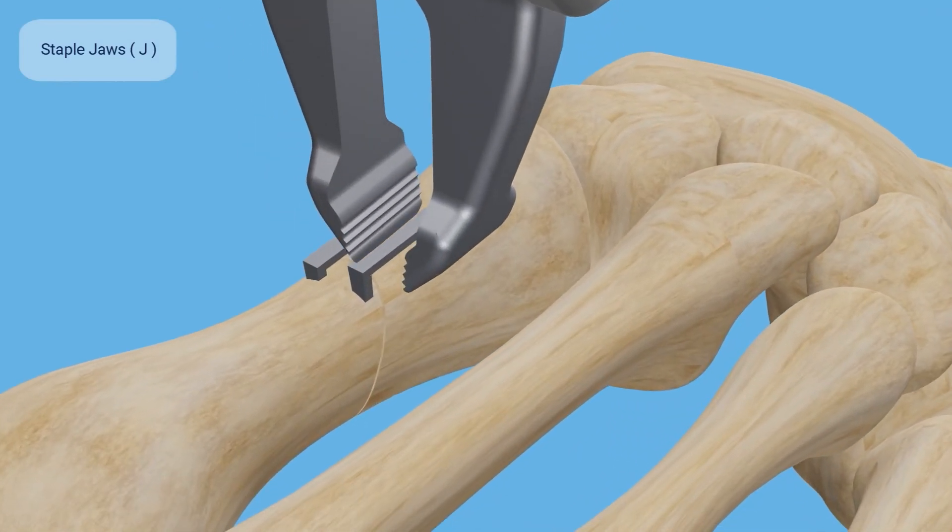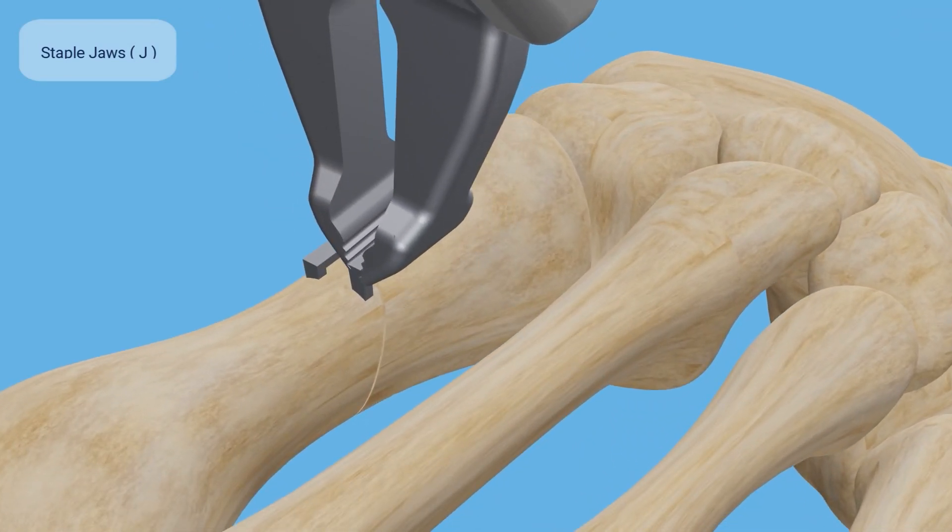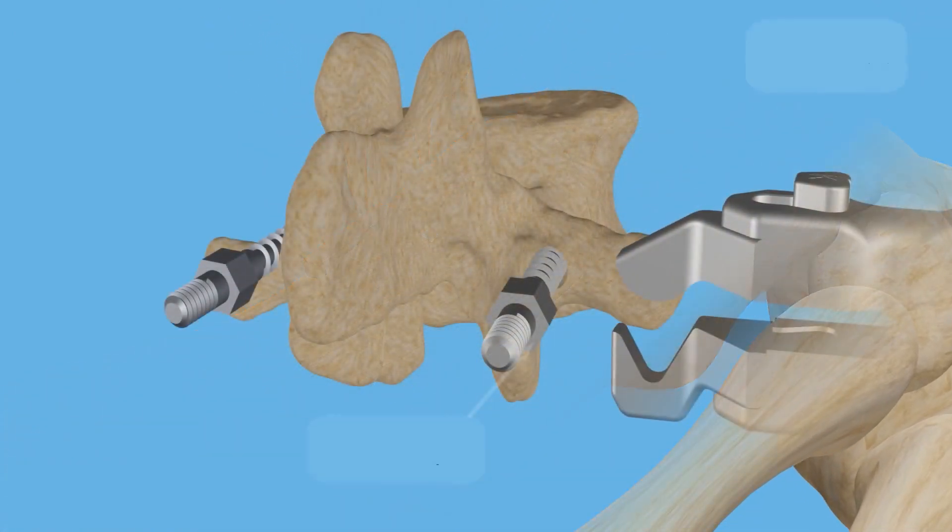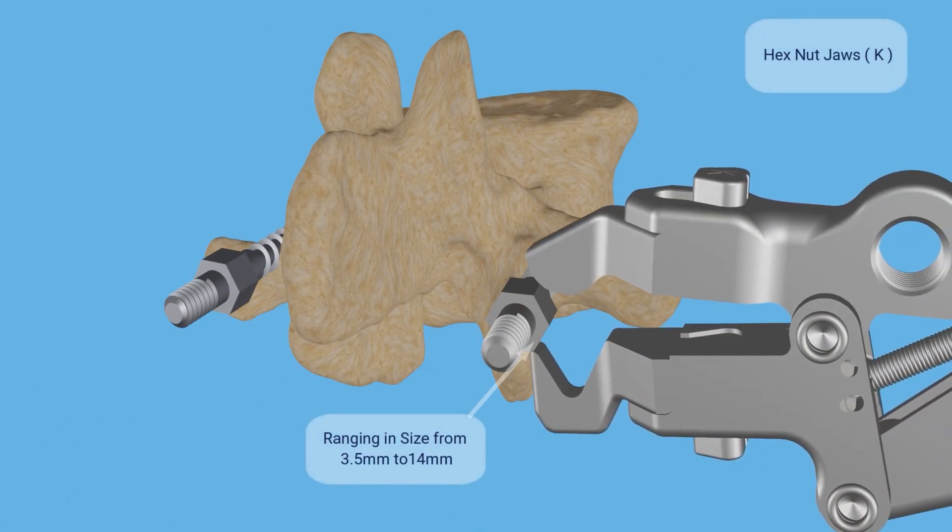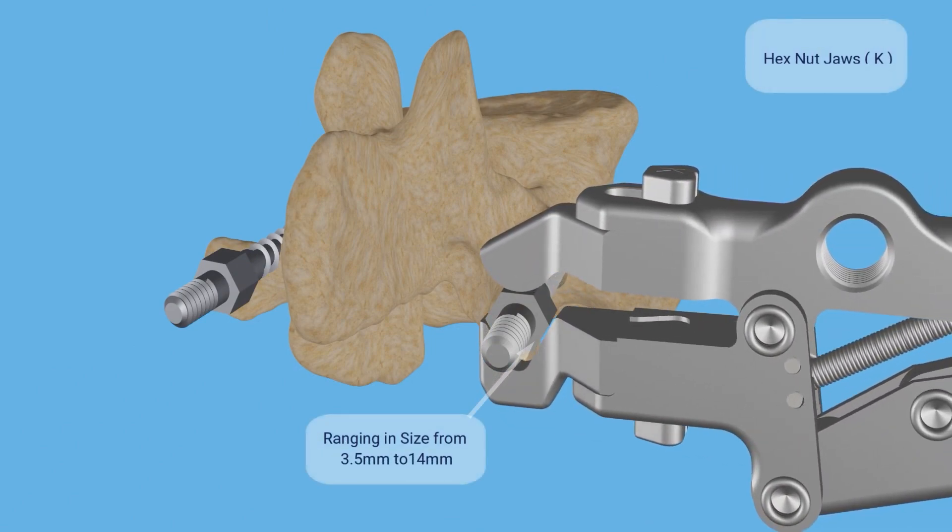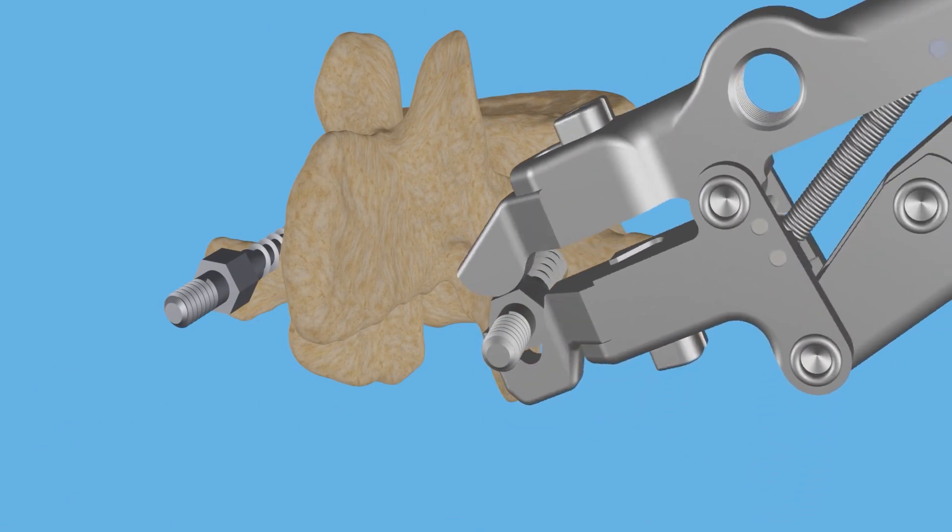The staple jaws are used to remove orthopedic staples. The hex nut jaws are used to remove hex nuts ranging in sizes from 3.5 mm to 14 mm in width.